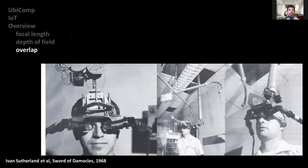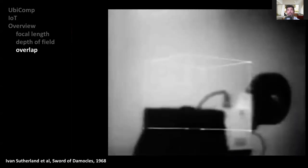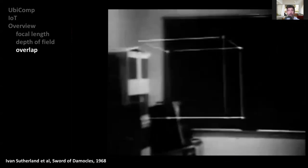This came to prominence in the Sword of Damocles project developed by Ivan Sutherland and his colleagues back in 1968. That offered two distinct images projected in front of both eyes that overlapped with their observation of the real world around them.